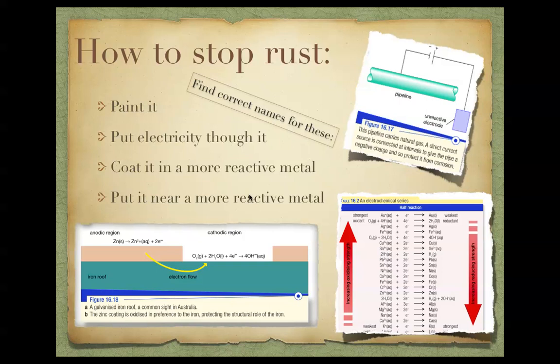So if you have galvanised roof, if you have galvanised iron, that means it's been coated with zinc or another type of metal that forms a coating of the zinc oxide. So coating it in a more reactive metal means it will react rather than the iron.